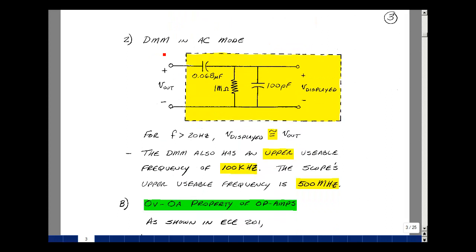The Fluke digital multimeter also has an AC mode. And just like the oscilloscope, it sticks a series capacitor between the measured signal and the face of the instrument. In the AC mode, the equivalent circuit of the digital multimeter is a little different than in the DC mode. Here, the input resistance is about 1 megaohm, and the capacitance is about 100 picofarads.